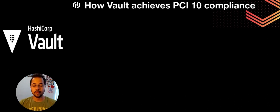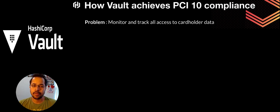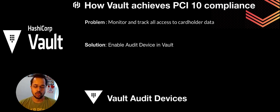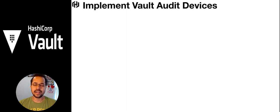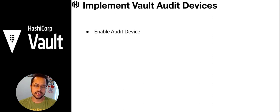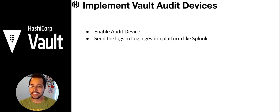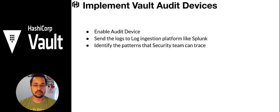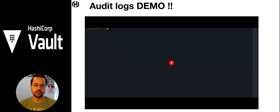Now let's look at how Vault achieves PCI 10 compliance. PCI 10 means you have to monitor and track all access to cardholder data. The solution is to enable audit devices in Vault. Vault audit devices capture logs at any path, and those logs can then be shipped to any log ingestion tool. The steps are: enable the audit device in Vault, send logs to a platform of your choice — for example Splunk, Azure Sentinel, and so on. The data is then processed, and teams identify patterns so that any breaches are automatically detected.